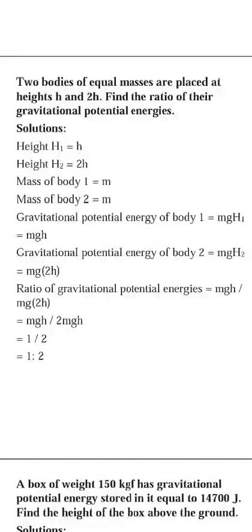In this question, two bodies of equal mass are placed at heights h and 2h. Find the ratio of gravitational potential energy. The mass is the same, height is different. The formula for potential energy is mgh. For the first case I write mgh, for the second case mg·2h. When I divide, m cancels, g cancels, and h cancels, giving 1 to 2.